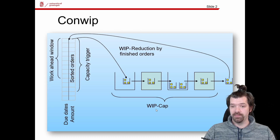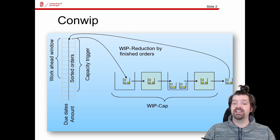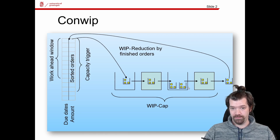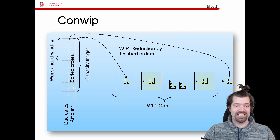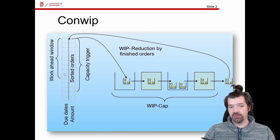We are limiting the WIP to an upper bound which is called the WIP cap. It is not allowed that the WIP exceeds the WIP cap — this is the first restriction.